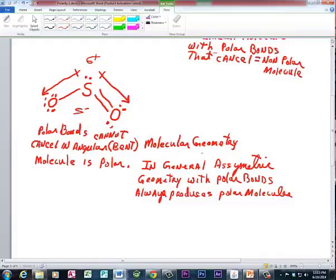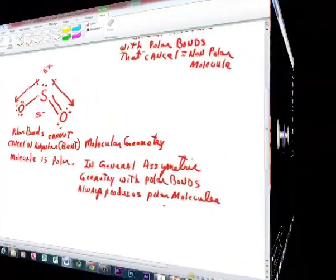In general, asymmetric geometry with polar bonds always produces a polar molecule.